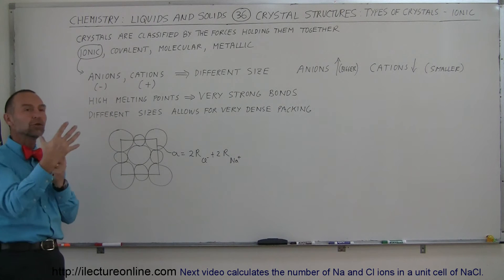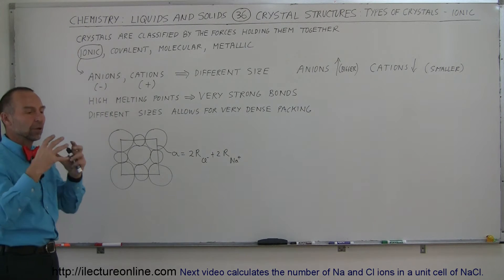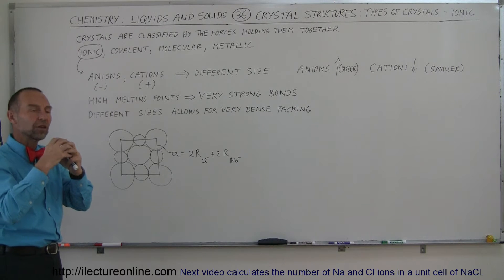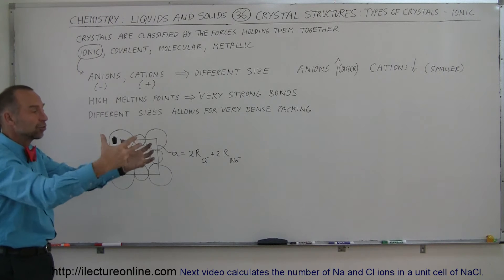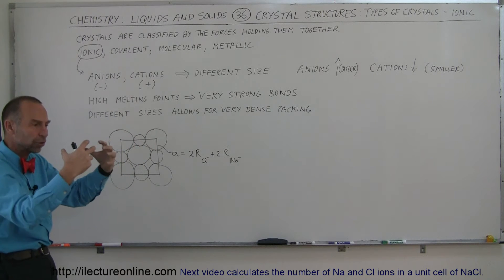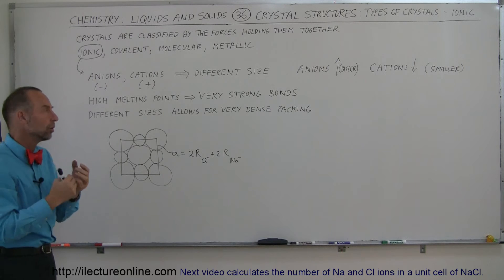The cations that lose an electron, now there's more positive charge at the center of the atom than there's negative charge in electrons, and the electrons get drawn closer in, so cations tend to be smaller.